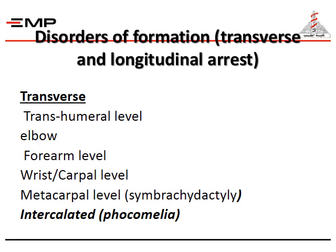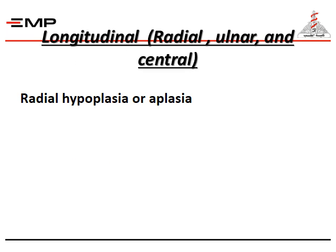Number one: disorders of formation — transverse and longitudinal arrest. Transverse arrest can occur at the transhumeral level, at the elbow, at the forearm level, at the wrist-carpal level, at the metacarpal level, or intercalated phocomelia. Longitudinal deficiency includes radial, ulnar, and central deficiency, including radial hypoplasia or aplasia.